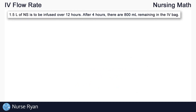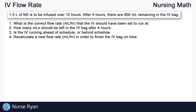We are given the following information: 1.5 liters of NS, or normal saline, is to be infused over 12 hours. After 4 hours, there are 800 mils remaining in the IV bag. The questions are as follows: 1. What is the correct flow rate in mils per hour that the IV should have been set to run at? 2. How many mils should be left in the bag after 4 hours? 3. Is the IV running ahead of schedule or behind schedule? And 4. Recalculate a new flow rate in mils per hour in order to finish the IV bag on time.